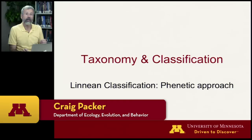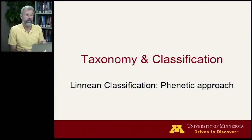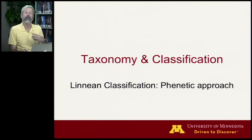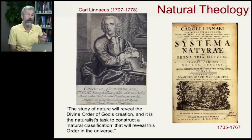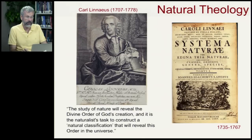In tackling this enormous task of classifying all the different species on Earth, we need to start with a Swedish scientist named Carl Linnaeus. He was the first to come up with a system of classification, and he used what are now called phonetics. Linnaeus, as we saw in the last lecture, was a proponent of natural theology.